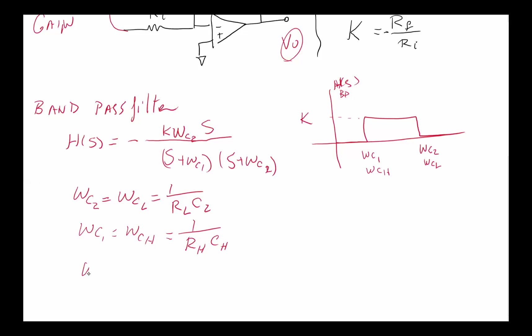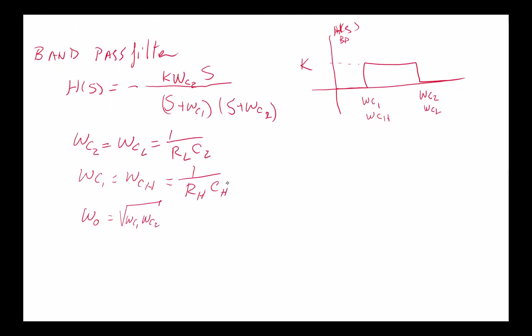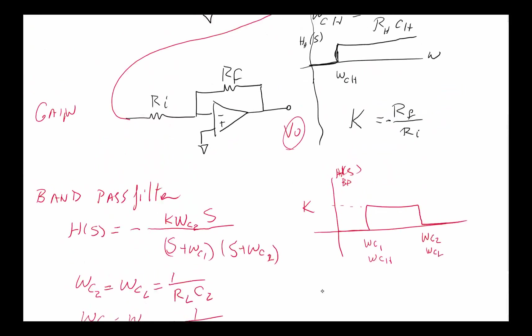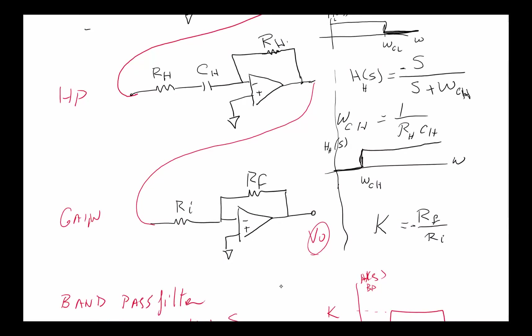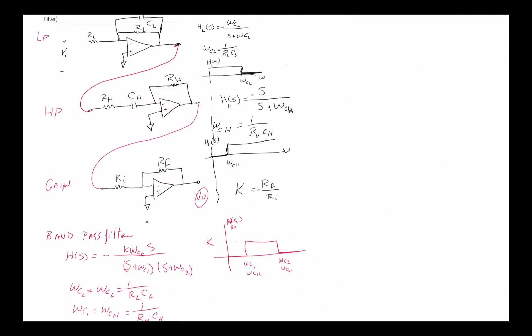There is another concept called omega zero, which is called the center frequency. The definition of center frequency is omega c1 times omega c2, and that's where the gain is at its maximum. Finally, K equals the gain, which equals RF over RI. So by selecting the appropriate resistors, we can design any active bandpass filter that we choose to.